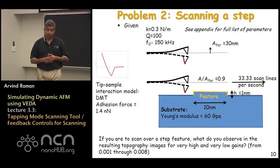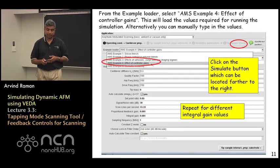So the question we want to ask is if you were to scan over the step feature which is more dissipative than the substrate, what do you observe in the resulting topography images at very large gains and very low integral gains.